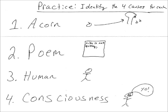Let's do the next one — a human being. The material cause is water and carbon. The efficient cause is my parents. The formal cause — well, just as acorns become acorn trees, human babies become human adults. What are they developing as they become human adults? I would say they're developing their rationality, their social skills, their emotional maturity, and so on.